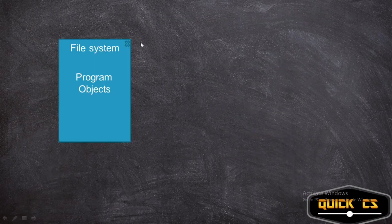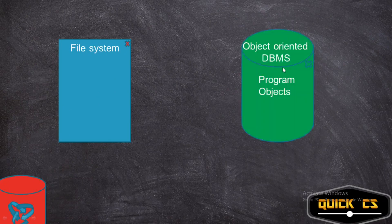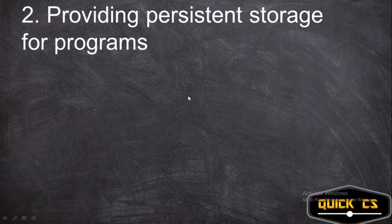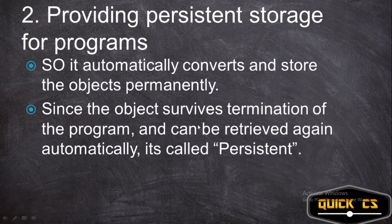In a file system, when you close a program the program objects are deleted permanently. But in terms of an object-oriented DBMS, since the DBMS recognizes object-oriented languages like C++ or Java, it recognizes the program object — it's like, 'I recognize you, I'll save you.' Since the object survives the termination of the program, it can be retrieved again automatically, and that is called persistent.